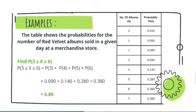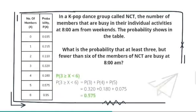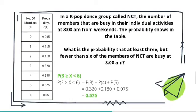In a K-pop dance group called NCT, the number of members that are busy in their individual activities at 8 a.m. from weekends - the probability shows in the table.